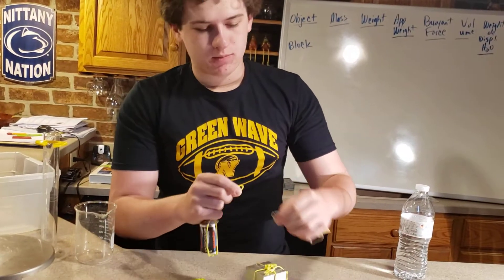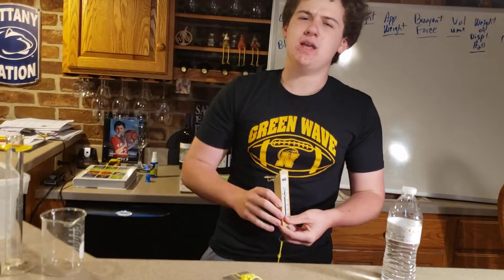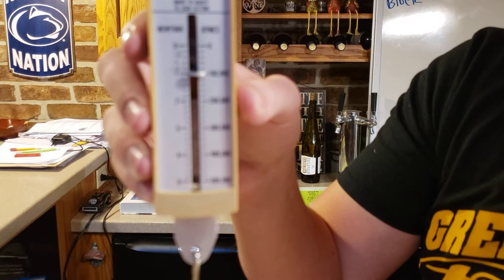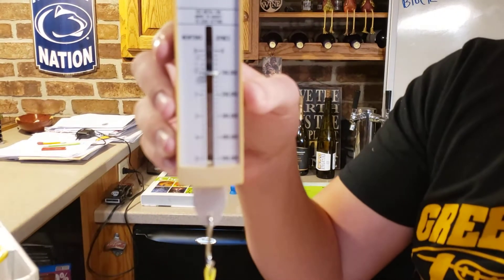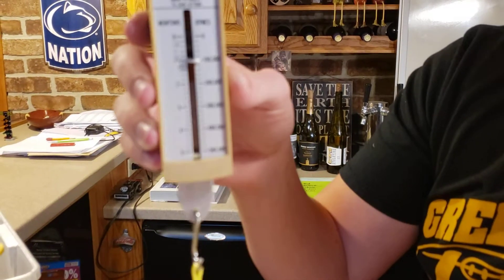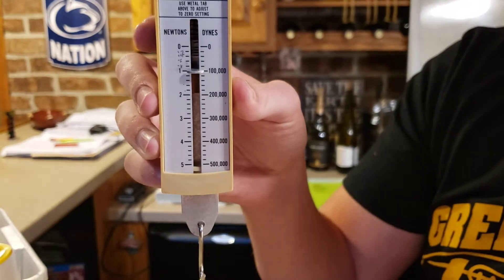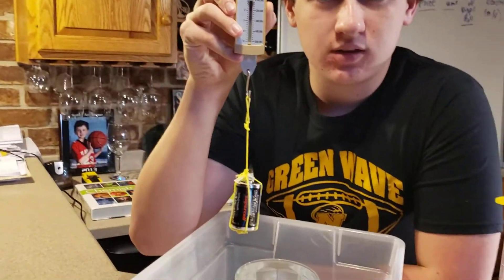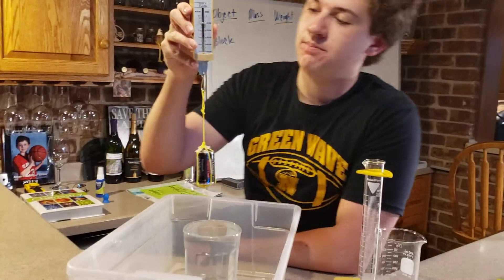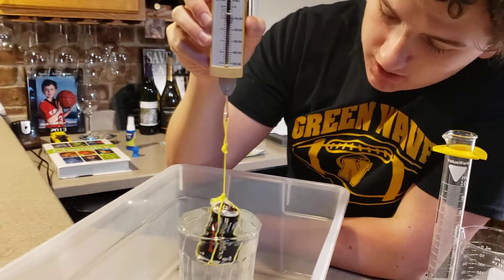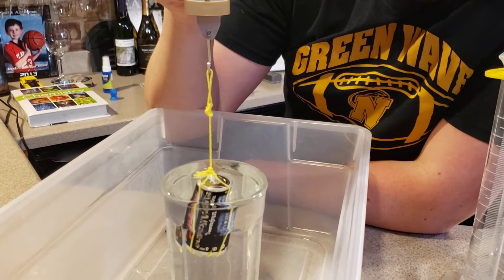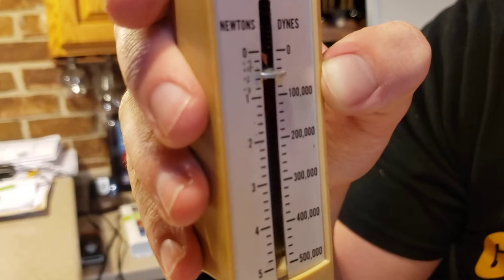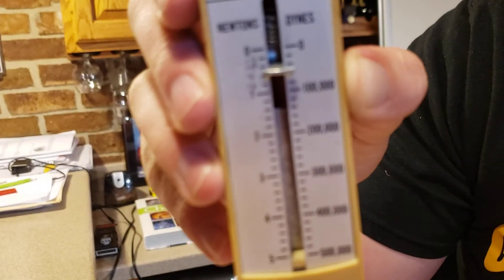Before we do the displacement, we've got to talk about the weight out of water versus the weight in water. This is the weight out of water — it is pretty much exactly 1 newton. Now, while we do this we will also be displacing the water to calculate the volume. If I get that just in there, just displacing enough water, we'll be able to see that that is just about half a newton. So that's actually kind of interesting.